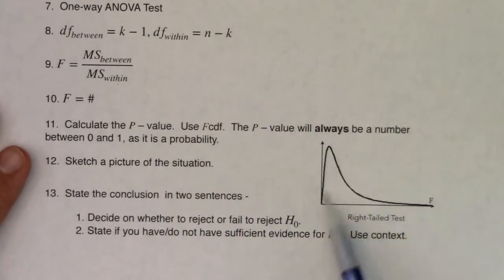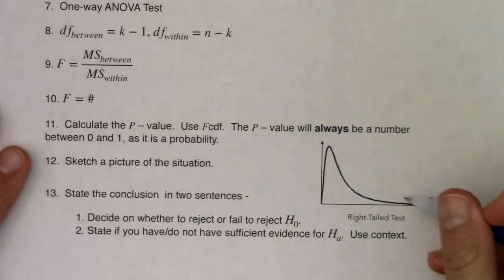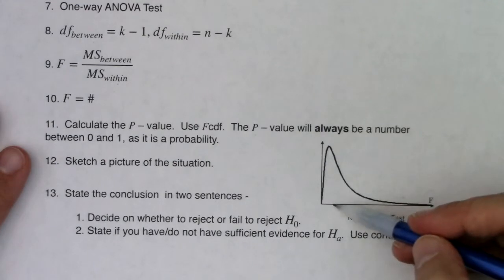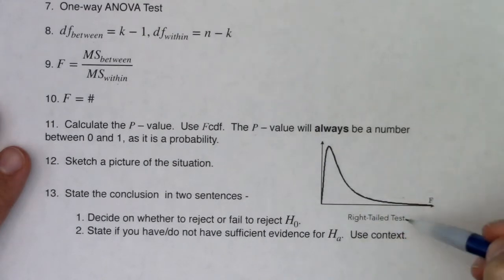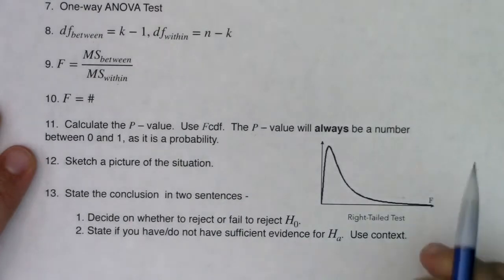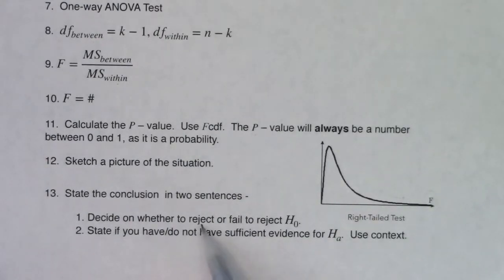You'll sketch a picture. This is your basic F distribution. Some of them look like hyperbolas, but this is a great basic graph for step 12. It will always be a right-tailed test. This is close enough to what we would call a T squared test. This is basically like T squared. So we're only looking at right-tailed tests. Label the x-axis with the letter F. One will be somewhere close to the peak, and then you shade to the right of that number you calculated in step 10. Give me your conclusion. Tell me whether you're going to reject or fail to reject, and then tell me whether or not you have sufficient evidence for the alternate. Make sure you use context.